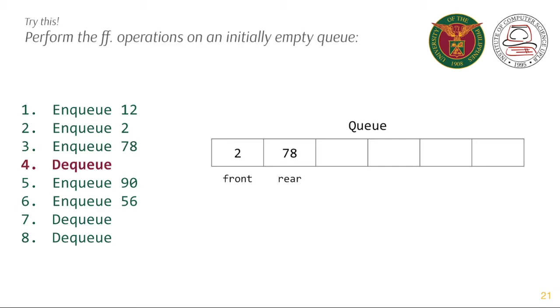Enqueue 90, enqueue 56, and then dequeue. 2 is removed. 78 is the new front. Dequeue, 78 is removed. 90 is the new front of the queue.